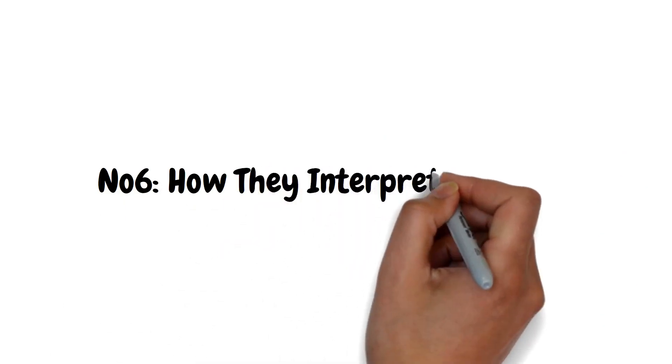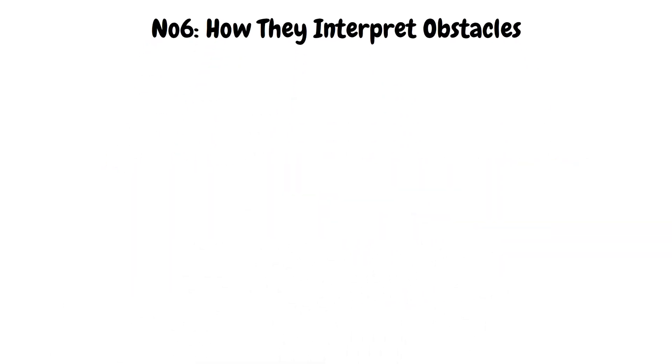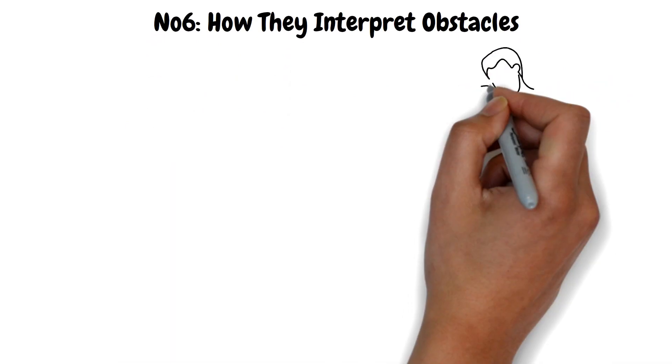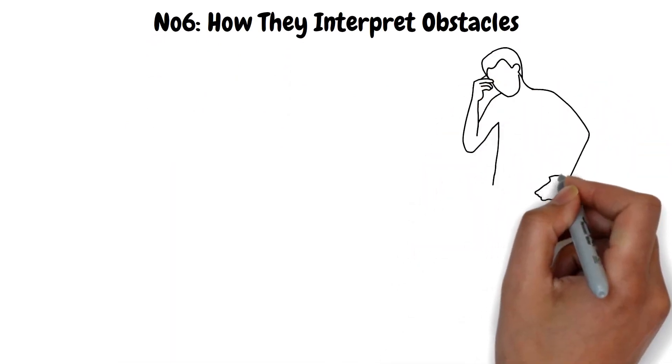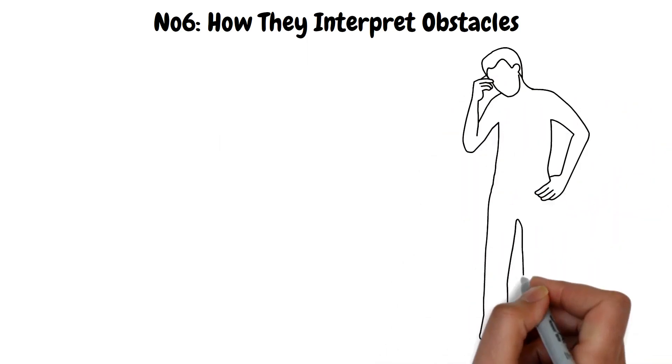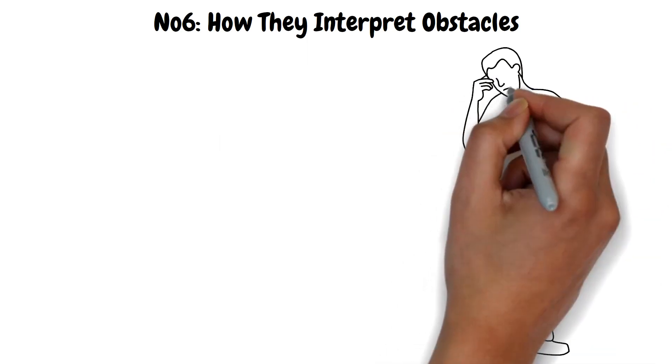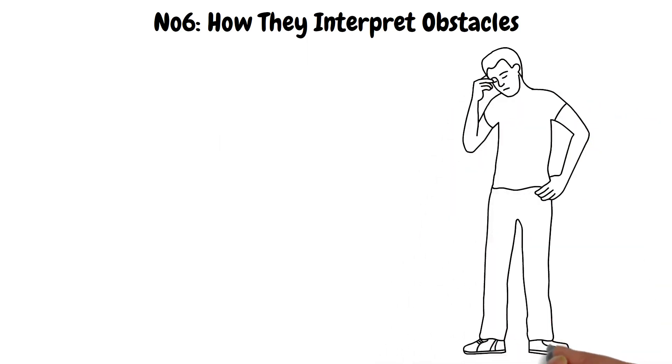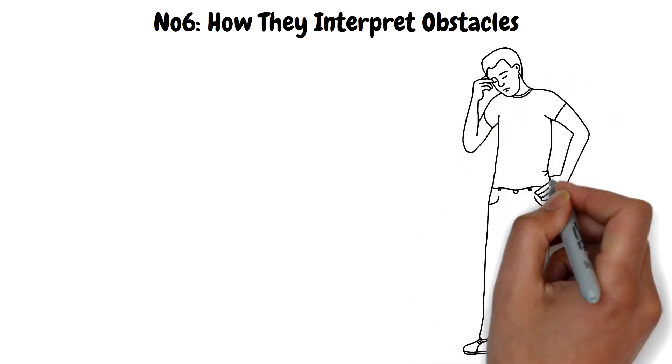How They Interpret Obstacles. When you hear people talk about challenges and obstacles, you'll get a sense of whether they will walk through life as victims or as agents of their own fate. If someone readily complains when there is any complication, that tells you that they have low frustration tolerance. These people are often prone to negativity and fatalism.